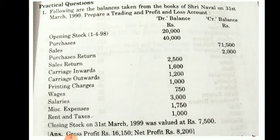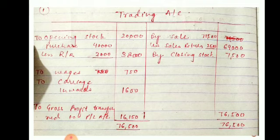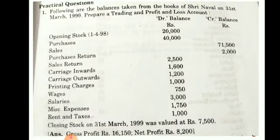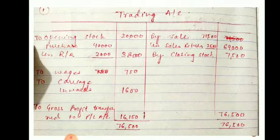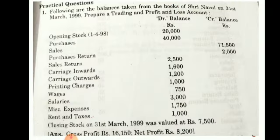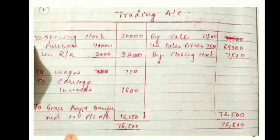In the trading account, firstly we record opening stock — the opening stock amount is twenty thousand. Then we add purchases — the purchases amount is forty thousand. We subtract purchase returns of two thousand, giving us net purchases of thirty-eight thousand. Wages are given as seven hundred fifty, and carriage inward is also recorded in the trading account.